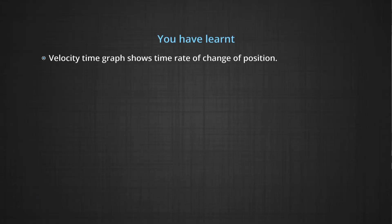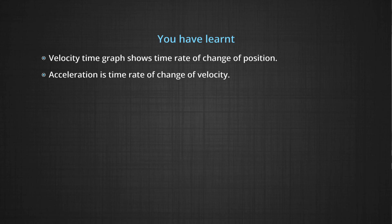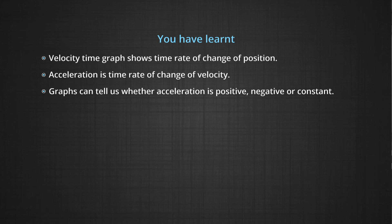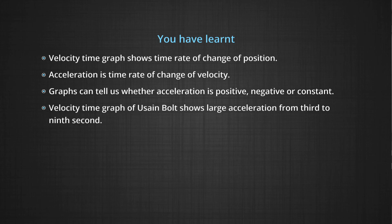In summary, you have learned that a velocity-time graph shows the time rate of change of position, acceleration is the time rate of change of velocity, and graphs can tell us whether acceleration is positive, negative, or constant. The velocity-time graph for Usain Bolt showed very large acceleration from the third to the ninth second. You can also learn to draw acceleration-time graphs, and for vehicles with constant force and uniform acceleration, you can find position, distance, and velocity at different times and plot them for a better understanding of the kinematics of systems.